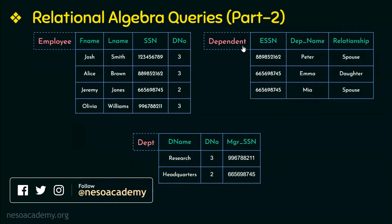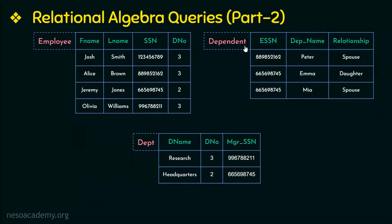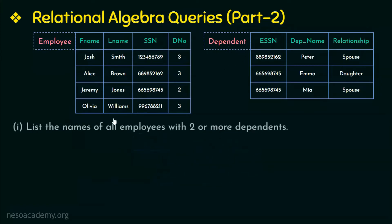Now, who is a dependent? A dependent is a person who relies on someone for financial support. They could be children or a spouse. One employee could have more than one dependent. Now let's discuss the first question: list the names of all employees with two or more dependents. We know that the names of all employees can be retrieved only from the employee relation, and to know who is dependent on which employee we get it from the dependent relation. So these are the two relations we mainly use in this example.